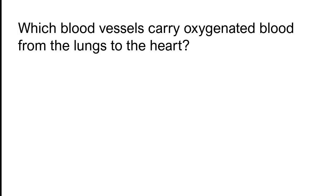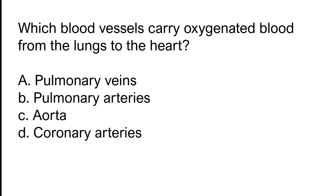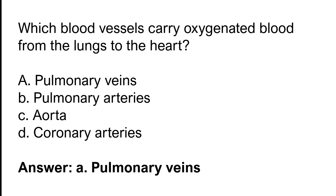Which blood vessels carry oxygenated blood from the lungs to the heart? Pulmonary veins, pulmonary arteries, aorta, coronary arteries. The correct answer is option A. Pulmonary veins carry oxygenated blood from the lungs to the heart.